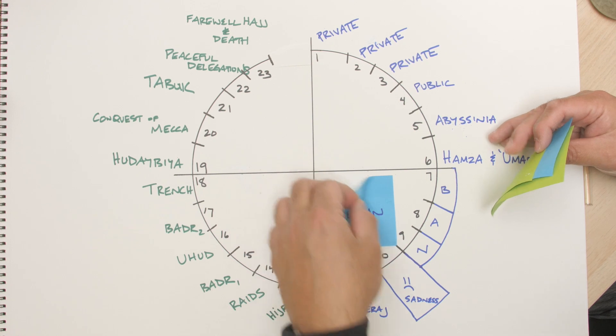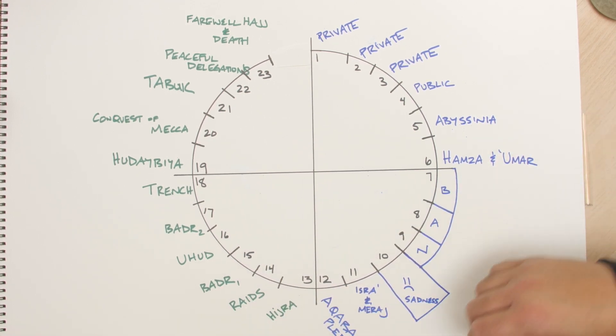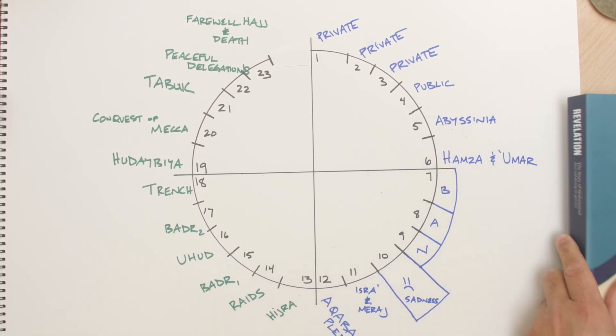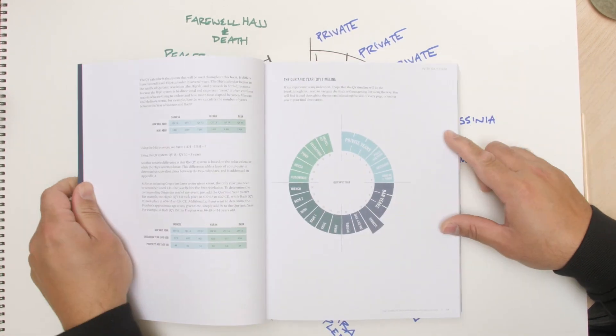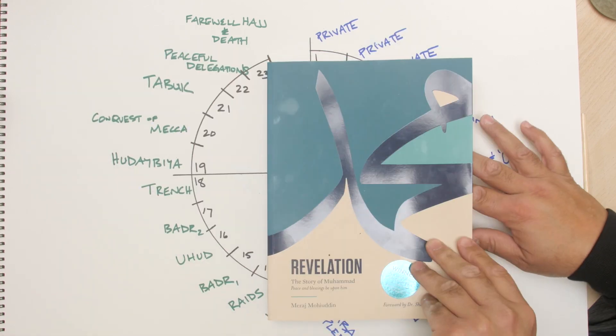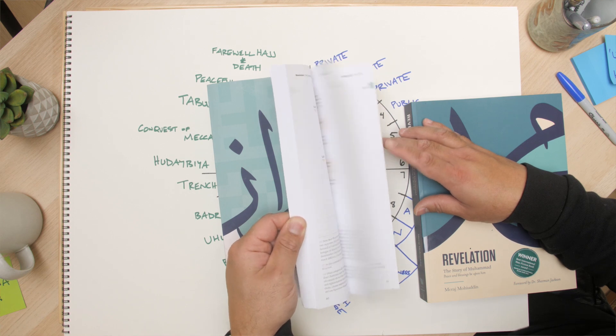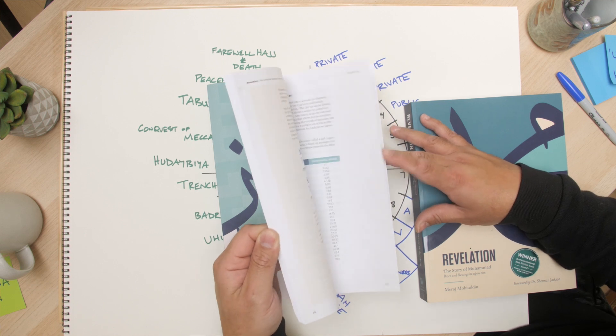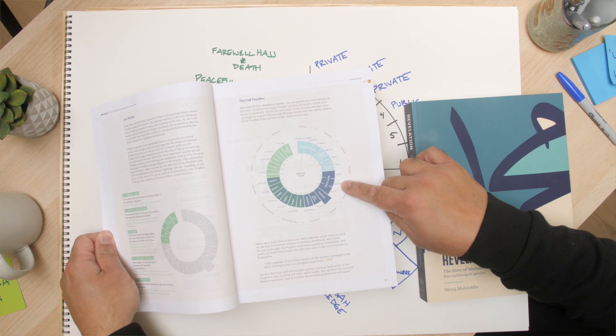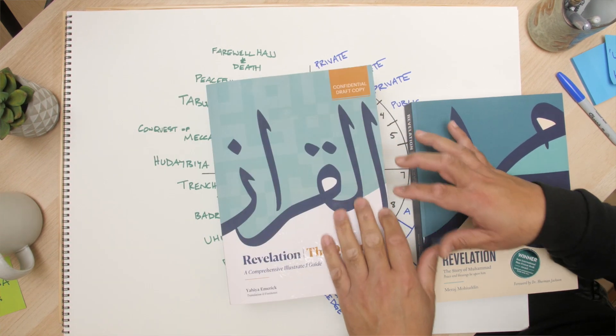Here you have it — this is the Quran Year Timeline, and as you can see, it looks like a Q — because it's about the Quran. It's the story of how the Quran was revealed. This is what I developed into this right here — the Quran Year Timeline, which is in my book, Revelation: The Story of Muhammad. And that same timeline is in the Quran draft coming out soon, because everything works according to the Quran Year Timeline in the revelation system.